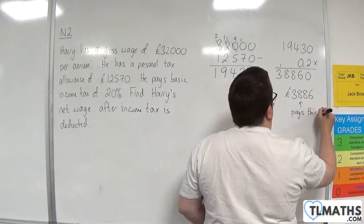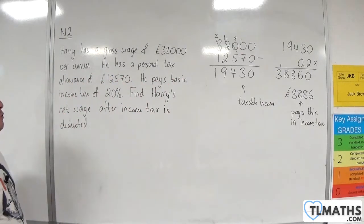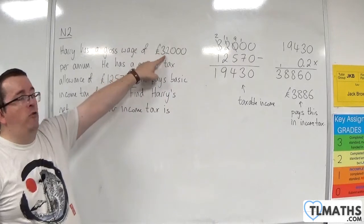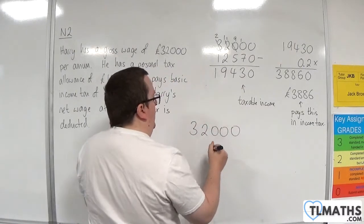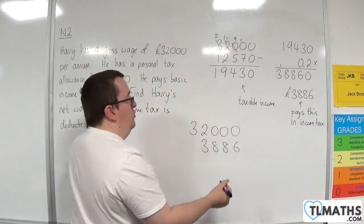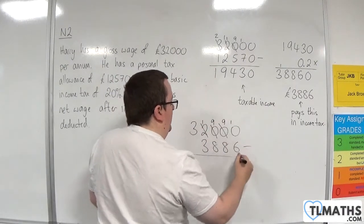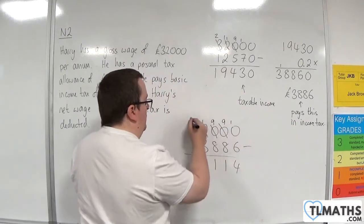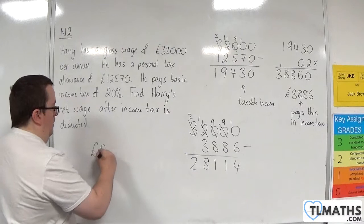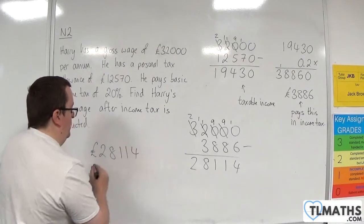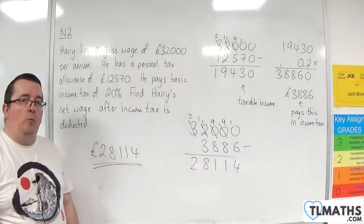So £3,886 is how much Harry pays in income tax. We then need to subtract that from the gross wage to work out the net wage: £32,000 take away £3,886. Borrowing as needed: 10 take away 6 is 4, 9 take away 8 is 1, 9 take away 8 is 1, 11 take away 3 is 8, bring down the 2 — giving £28,114. That is Harry's annual net wage once income tax has been taken away.